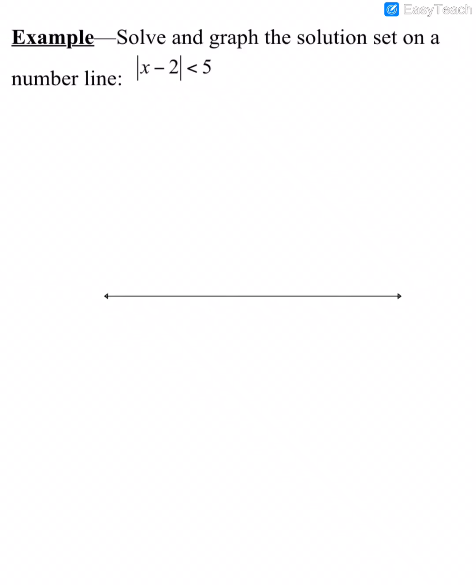We determine the connecting word once the absolute value is by itself on the left side of the inequality. Looking at this inequality, the absolute value is by itself and it's first. The inequality symbol is less than, and less than means 'and.' Now let's take the expression out of the absolute value and separate it into two inequalities.